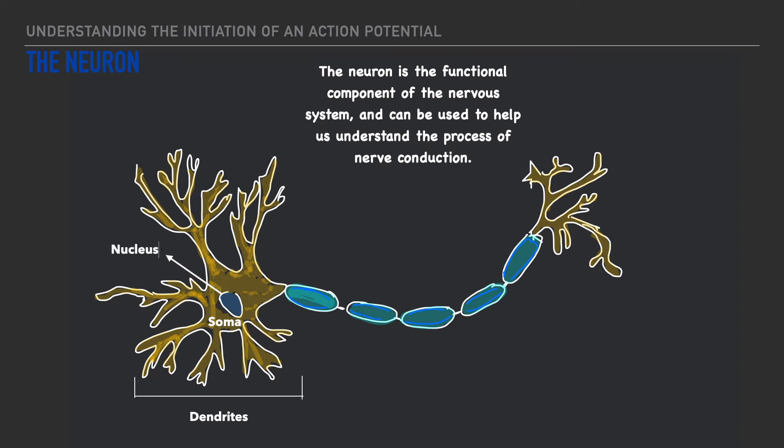Now right before we leave the component we've labeled as the cell body or soma we have a structure known as the axon hillock and this axon hillock is responsible for merging together a variety of stimuli that are received by the dendrites.